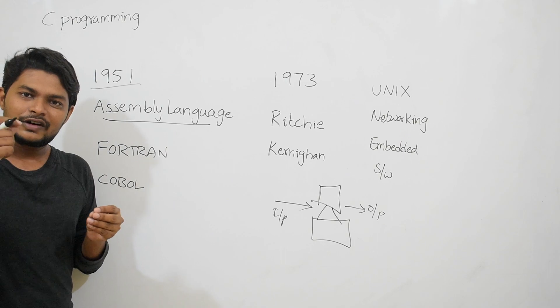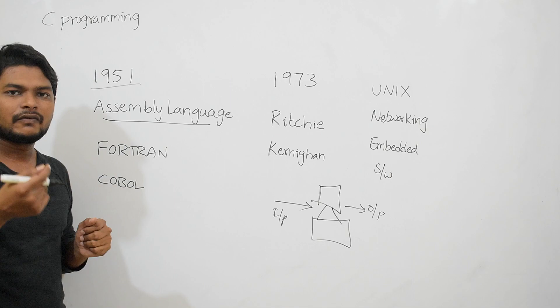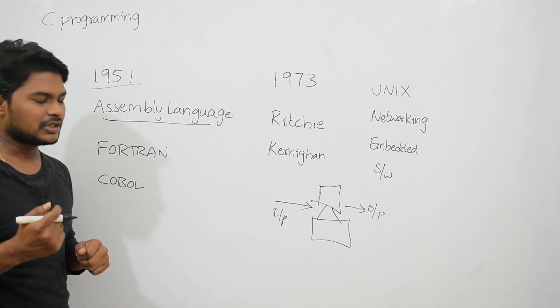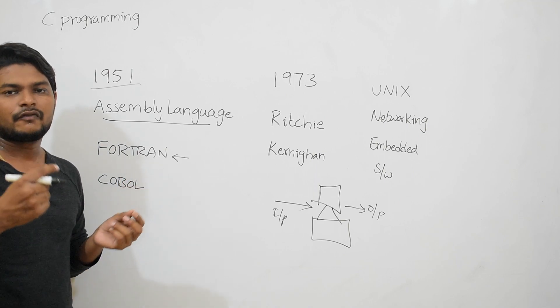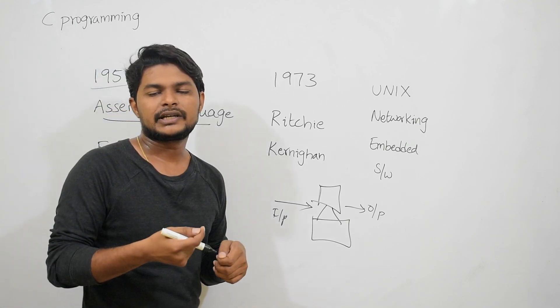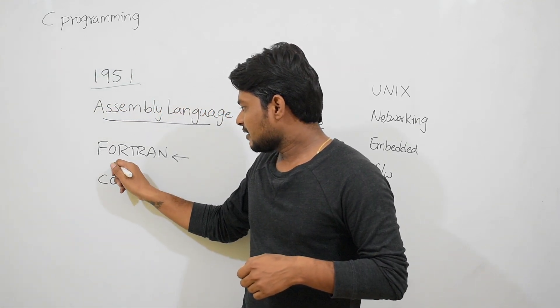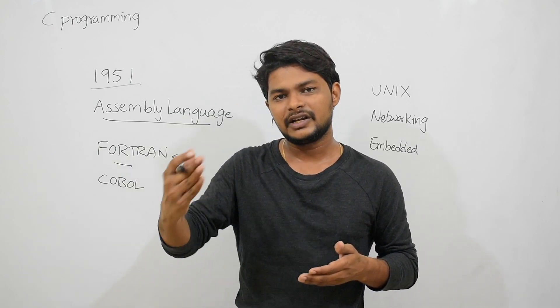At that time, for specific purposes, there were different programming languages. For example, for developing scientific applications, people used FORTRAN (Formula Translation). For business applications, people used COBOL, which is Common Business-Oriented Language. For specific purposes, people had different languages.